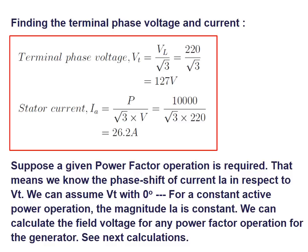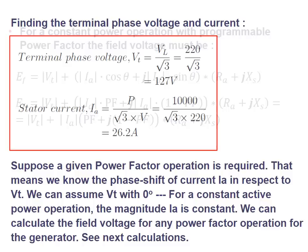This problem works through a very interesting operation for this machine. Suppose the power factor is impressed — that means for a given active power, we know the phase shift of current IA with respect to VT. That's the power factor. We can assume VT at zero degrees. For a constant active power operation, the magnitude of IA is constant. We can calculate the field voltage for any power factor operation for the generator.